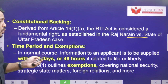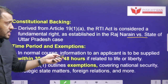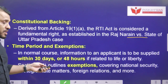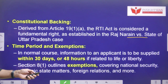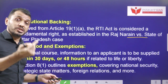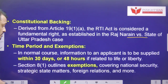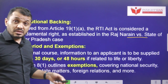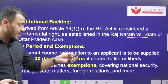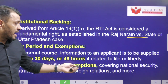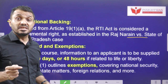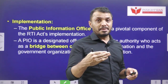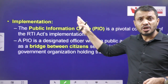What is the time period to get information? Whatever information is asked by the applicant will be provided between 48 hours to 30 days, depending on what kind of information is sought. According to Section 8, Clause 1, there are certain exemptions — if the information sought is related to national security, strategic state matters, foreign relations, and so on, that information will not be provided, as it is exempted in the best interest of national security.